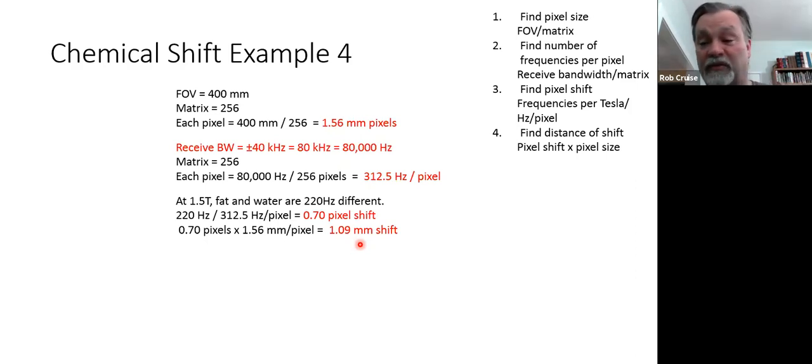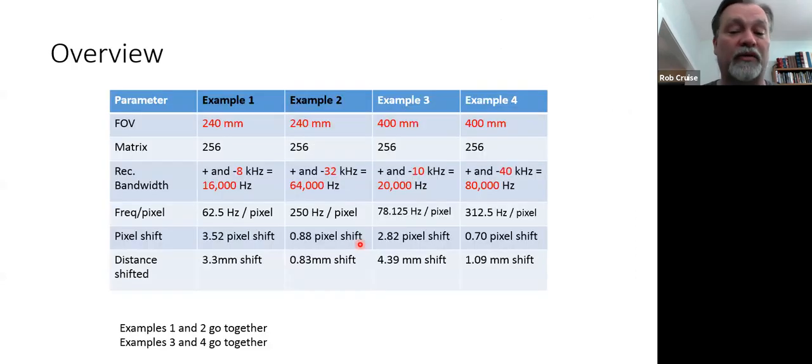Examples one and two go together and examples three and four go together. The difference is example one and two are at 240 field of view and examples three and four are at 400 millimeters field of view. And here is where we put everything together. So 240, 240, 256. So we have an eight, which is a narrow bandwidth, eight kilohertz, 16,000 hertz because we have a plus and minus eight. So if we go from isocenter and we add eight on one side and we add eight on the other for the positive and negative poles of that gradient, we have 16,000. So 62.5. Here's your two answers. How many pixels was it shifted? 3.52. And your second answer is what does that correlate to on the body? That's a 3.3 millimeter shift.